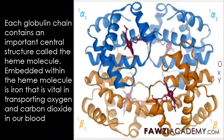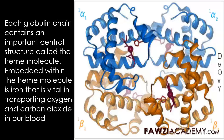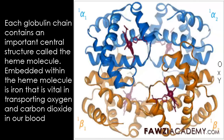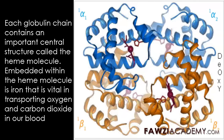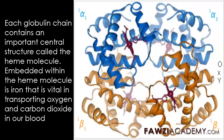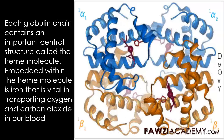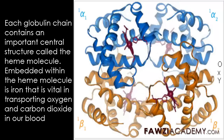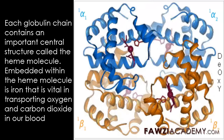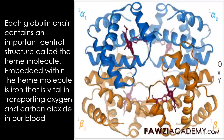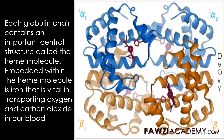Hemoglobin is made up of four protein molecules, globulin chains, that are connected together. The normal adult hemoglobin HBG molecule contains two alpha globulin chains and two beta globulin chains.